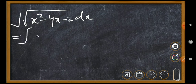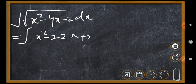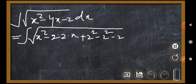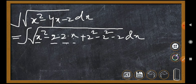We rewrite x squared minus 4x minus 2 by completing the square: x squared minus 4x gives us (x minus 2) squared minus 2 squared, so we get (x minus 2) squared minus 6. This uses the a minus b formula: a squared minus 2ab plus b squared.